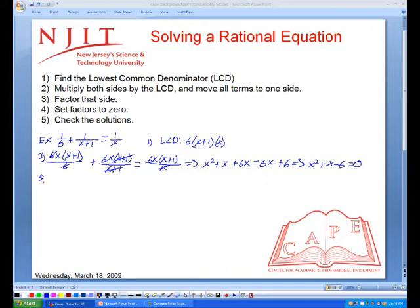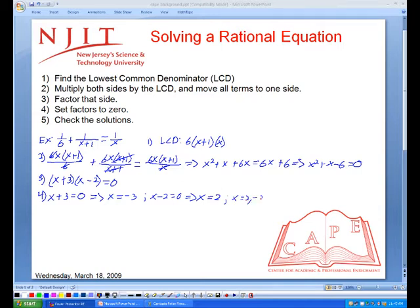Now we want to factor. So we're going to get x plus 3 times x minus 2 equals 0. So notice this will just give us that. And then we want to set each factor to 0. So x equals negative 3. And x is going to equal 2. So x equals 2 or negative 3.